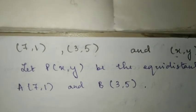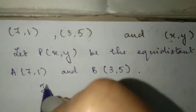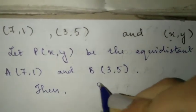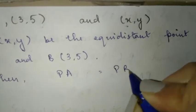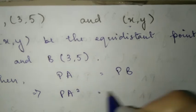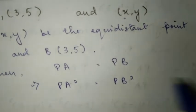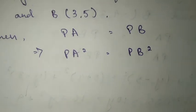Since it's equidistant, PA is equal to PB. We can square both sides to avoid the square root.